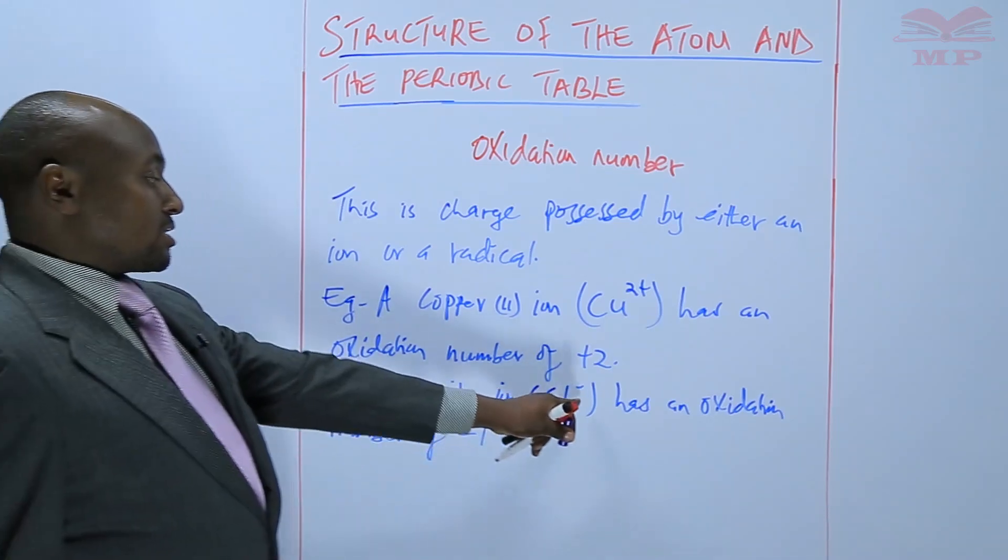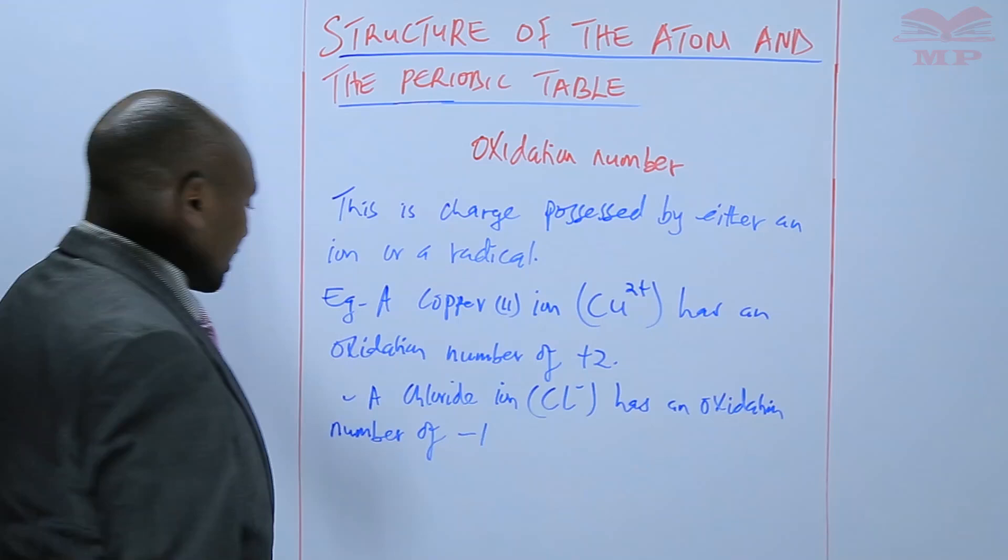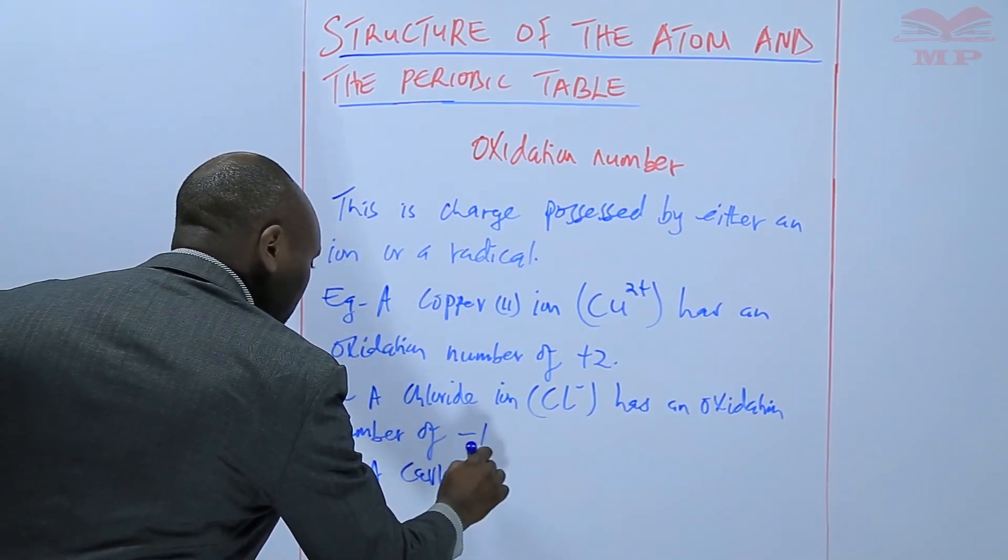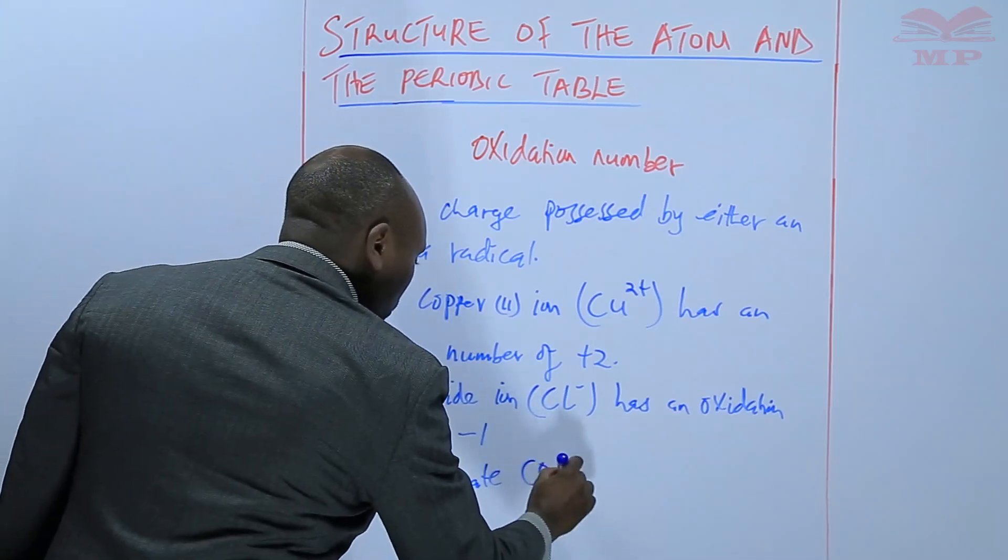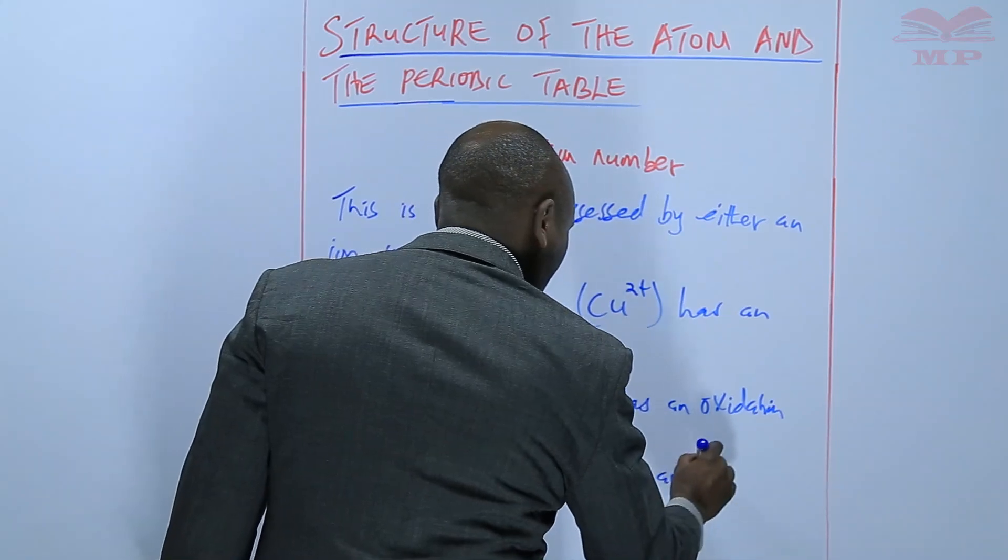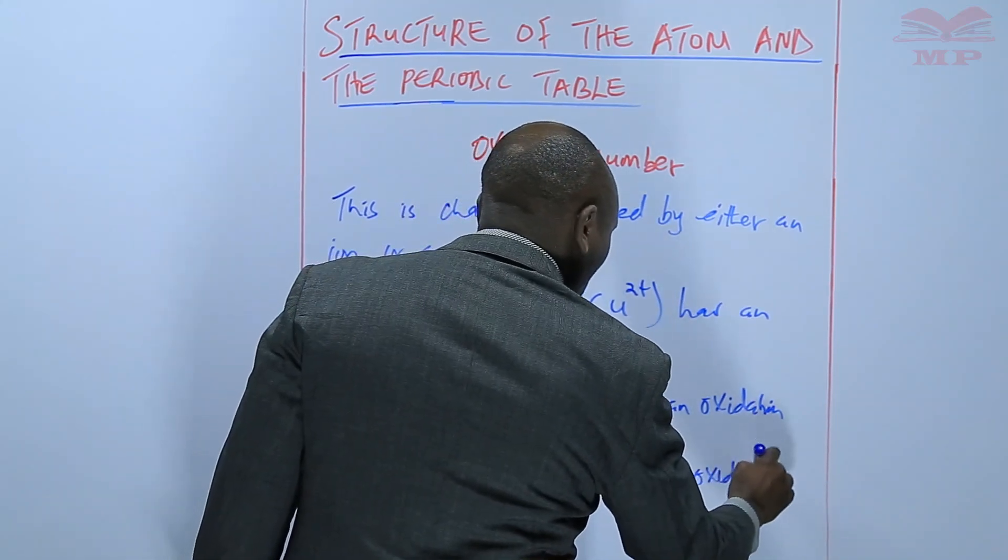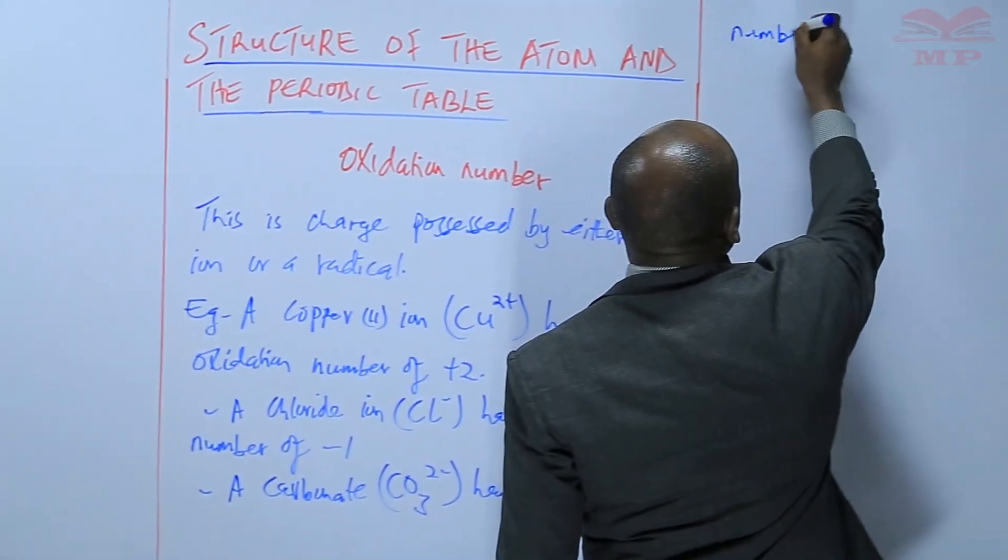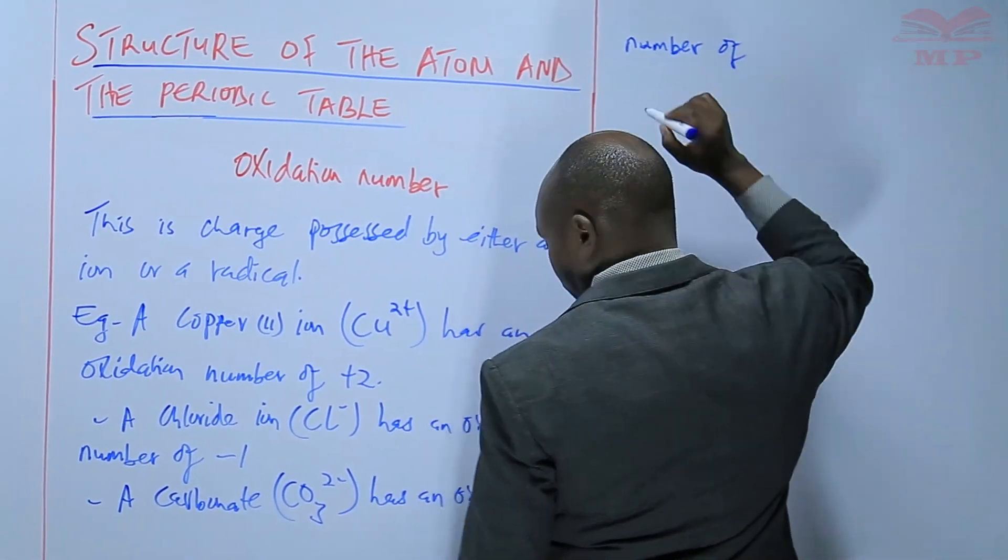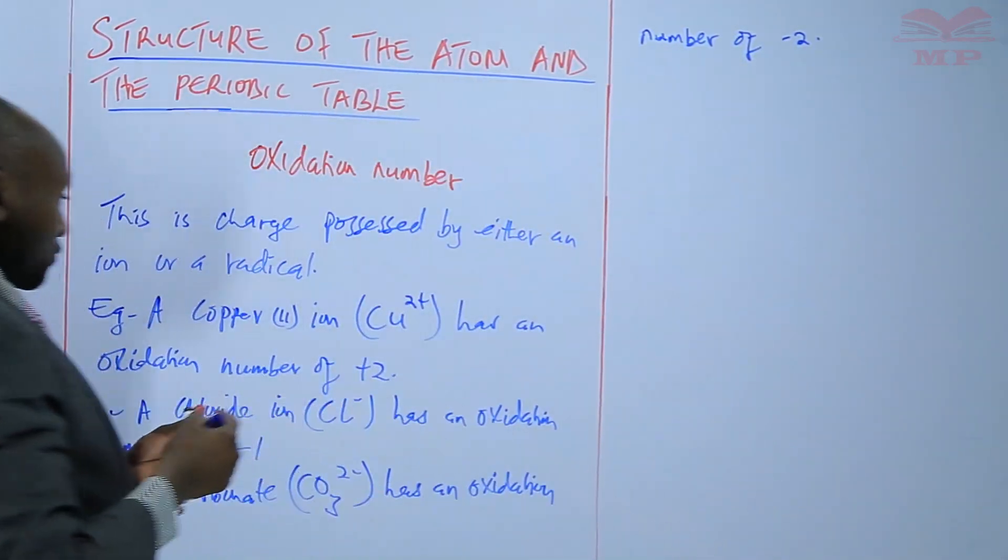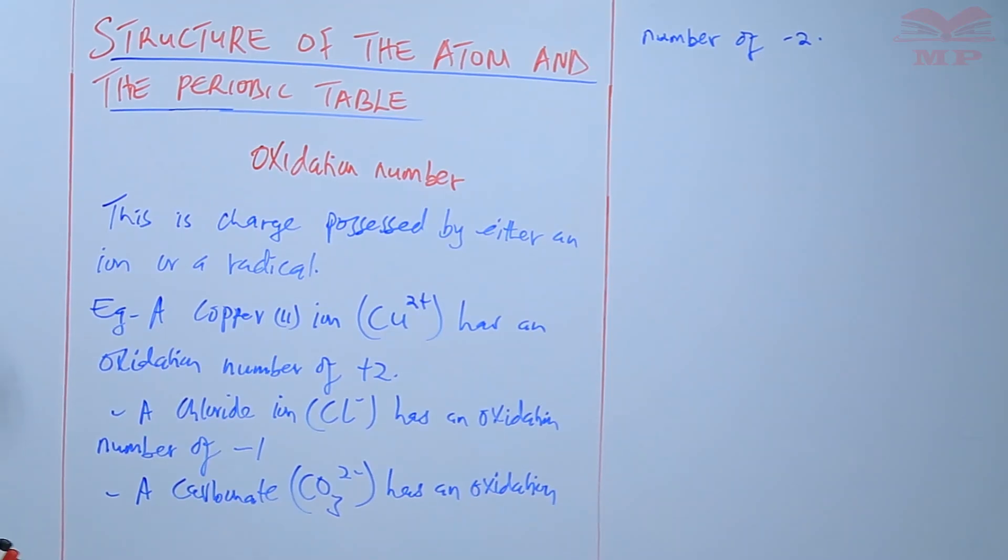So the charge that is indicated there. If you take an example of a radical, like a carbonate, CO3 2-, this one has an oxidation number of negative 2. So oxidation number is the charge that is possessed either by an ion or a radical.